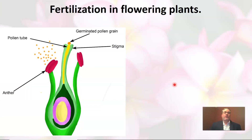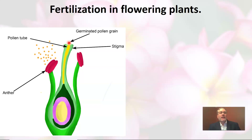Here we have an anther with pollen grains coming out of it, and one grain of pollen has landed on this stigma. Remember, when pollen moves from the anther to the stigma, that's pollination. Once the pollen lands on the stigma, a change happens in the flower — something called a pollen tube begins growing down through the hollow style.